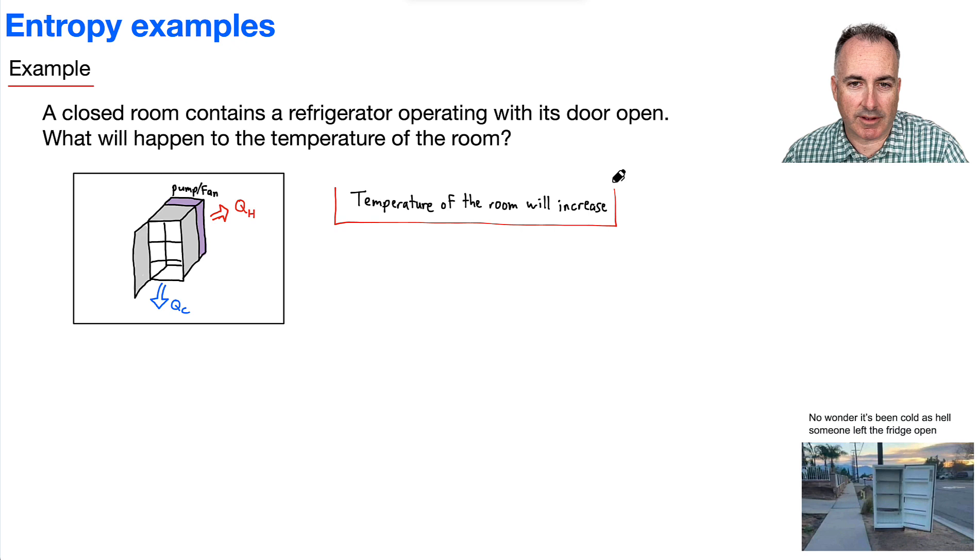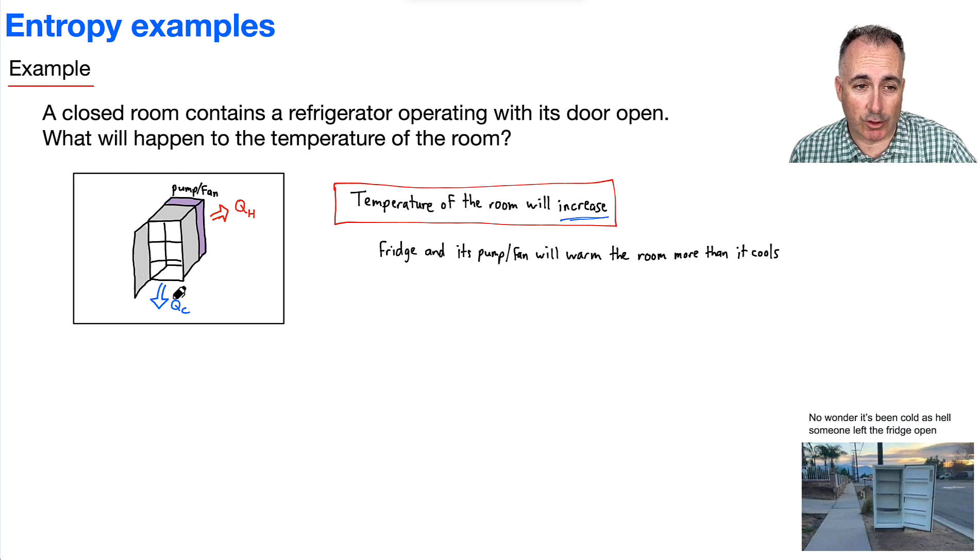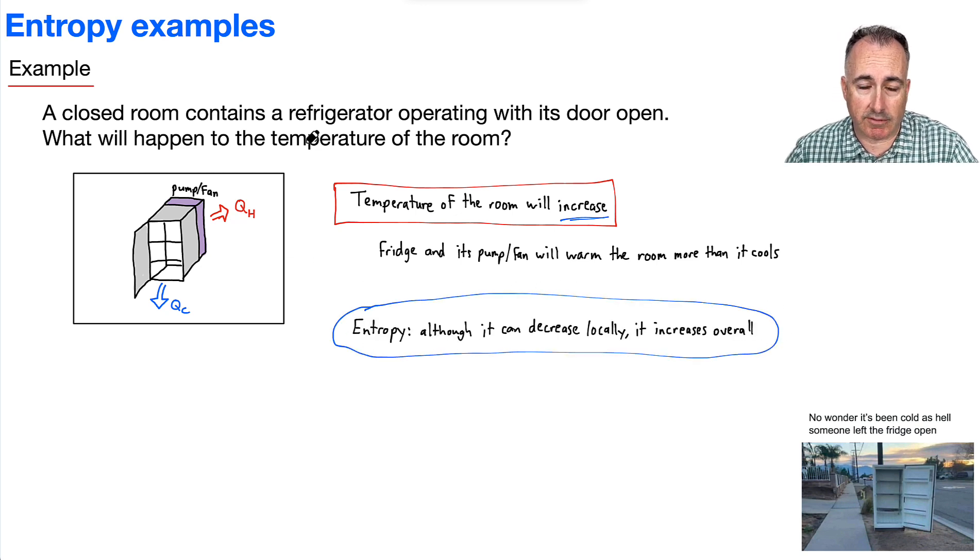Now, isn't that weird? It's a little bit counterintuitive, unless you think carefully about entropy, for example. Again, just to reiterate, that's because although it's cooling the room, it turns out the fridge and the pump fan will actually warm the room more than it cools. Remember, this is just an application of entropy, where entropy of the universe will increase overall. So that's the second law, for example. So it says that overall, although the entropy might decrease locally, for example, it increases overall. So that's really important to know. This is the application, like I said, of second law.